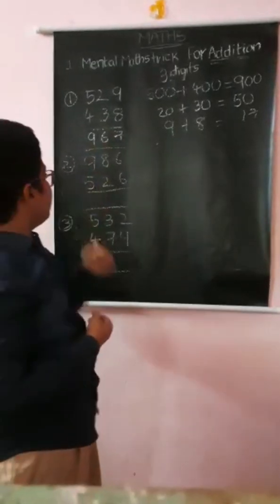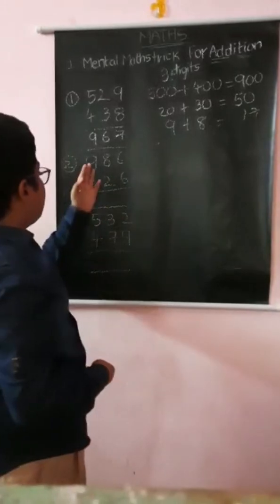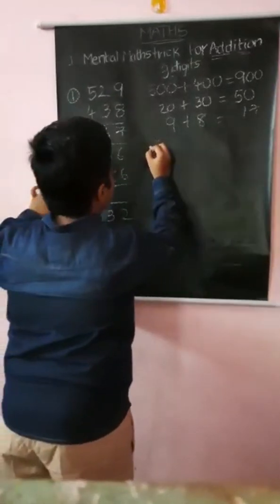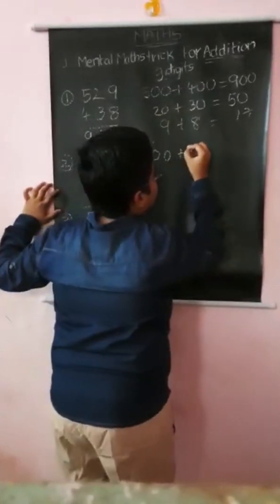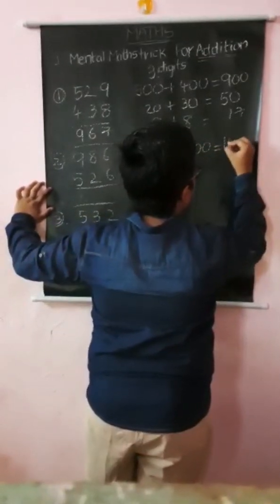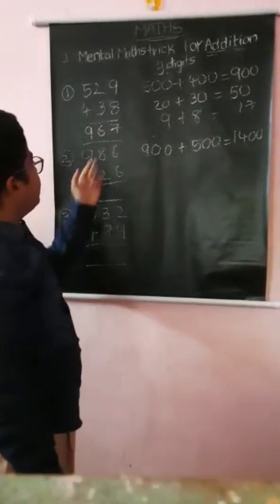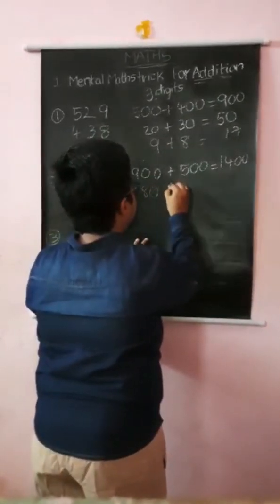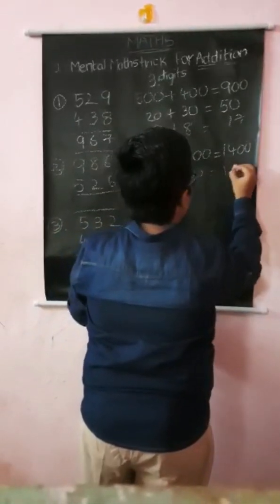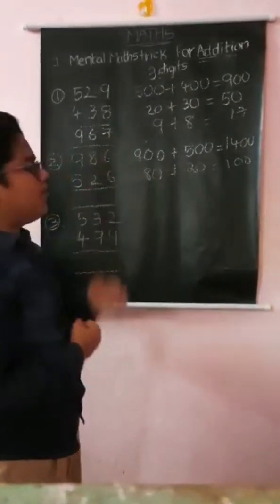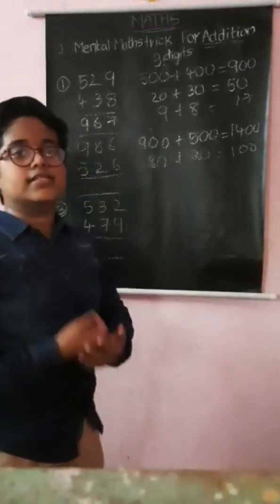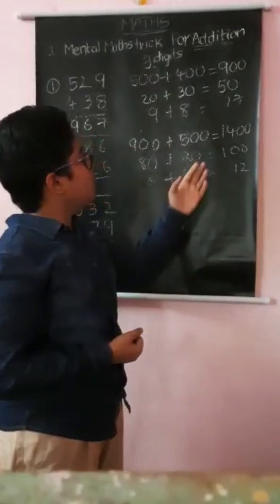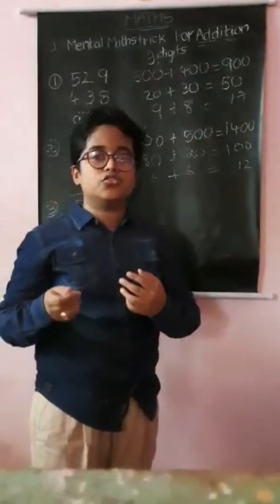Next problem: 986 plus 526. We start from the hundreds place. 9 is in the hundreds place, so 900 plus 500 is 1400. In the tens place, the number is 8 and downwards the number is 2. 80 plus 20 is 100. Now in the ones place, the number is 6 and down also the number is 6. You know that 6 plus 6 equals 12. So 1400 plus 100 is 1500, plus 12 is 1512.